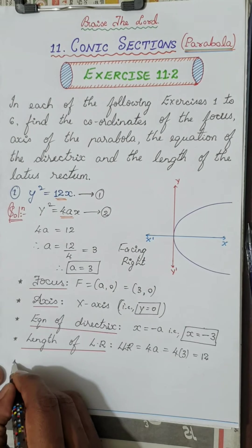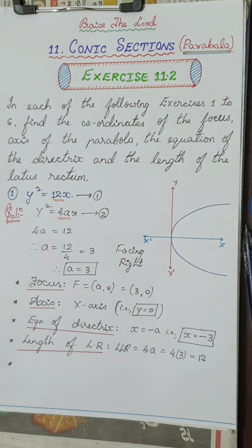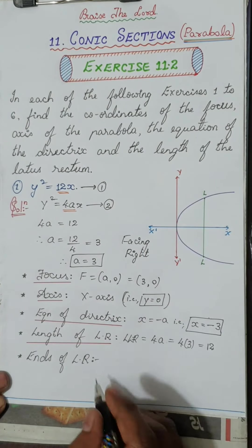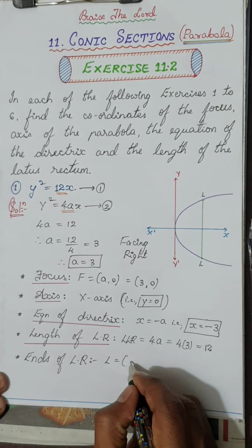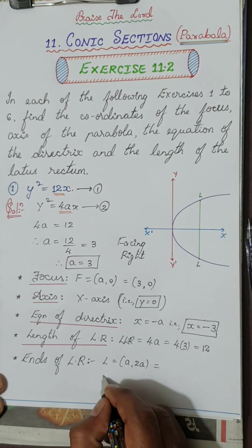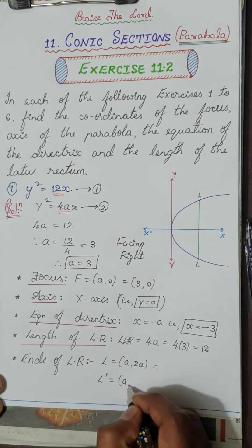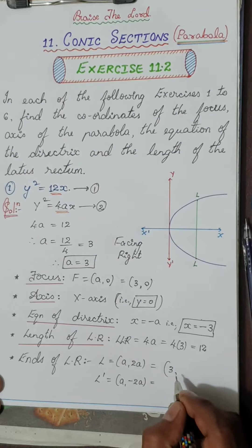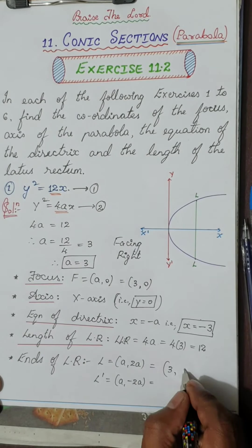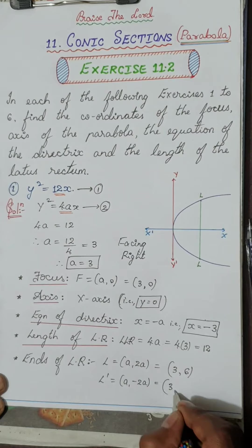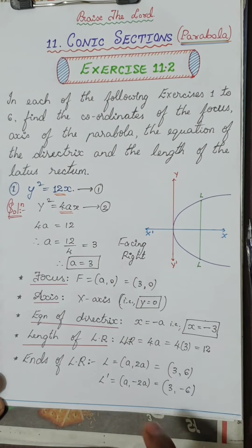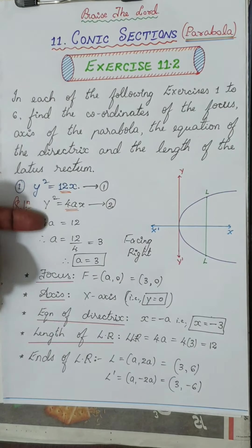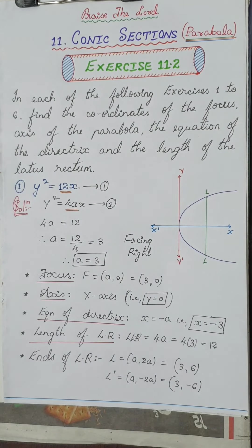The ends of the latus rectum for facing right are L = (a, 2a) and L' = (a, -2a). With a = 3: L = (3, 6) and L' = (3, -6). These are the ends of the latus rectum. Without knowing the facing, you cannot determine the parameters correctly.